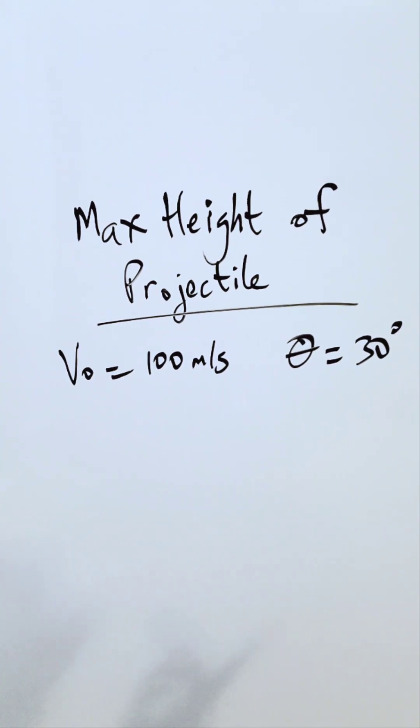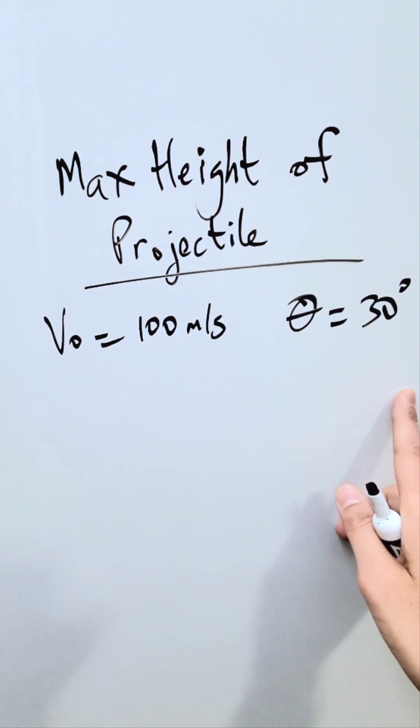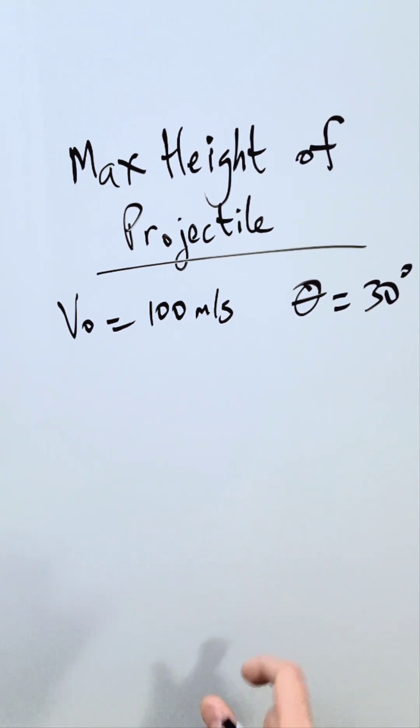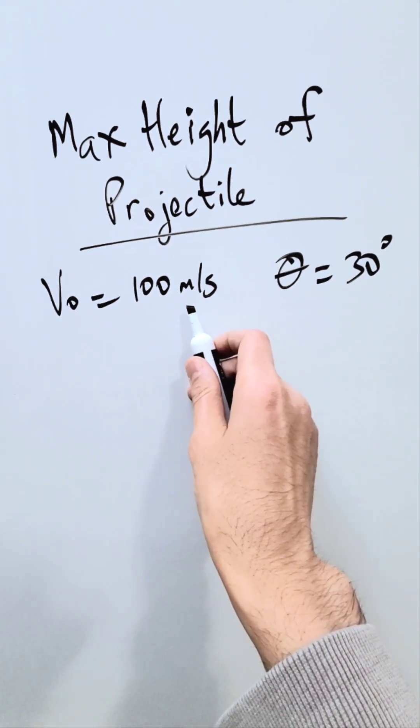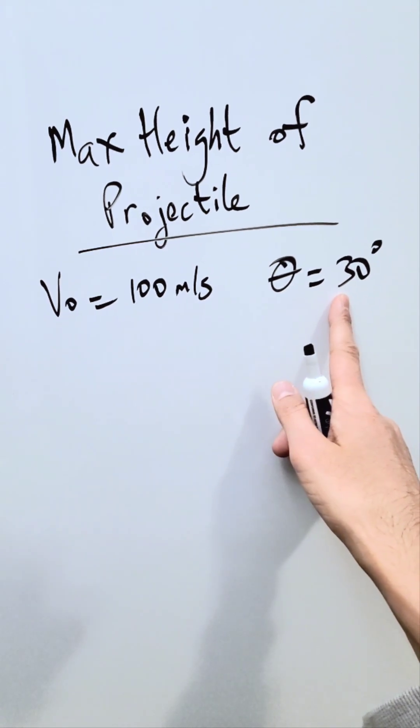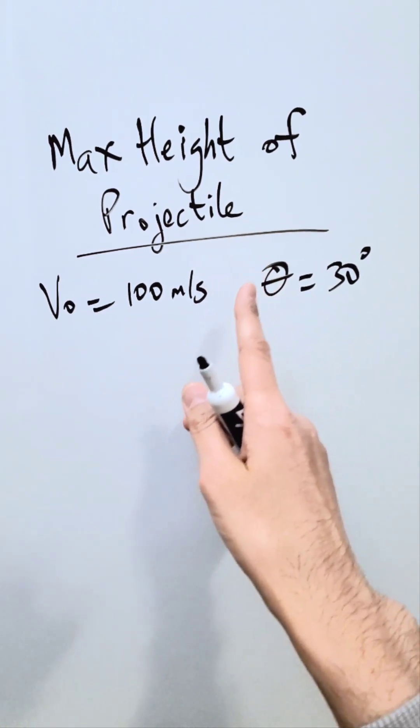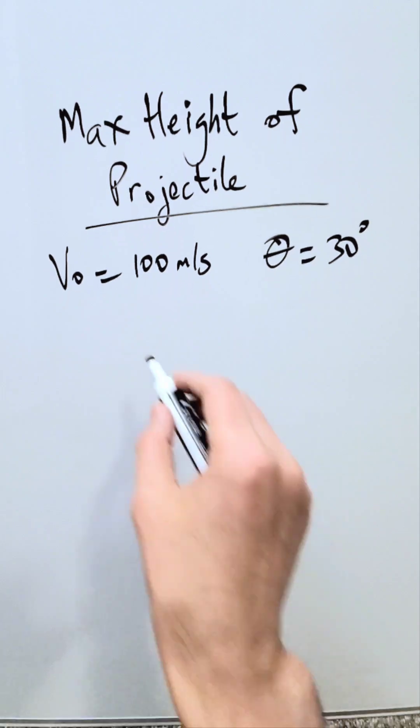Let's examine a projectile motion question. The trajectory of such a projectile is always an upside down parabola. You are looking here at an object which is shot with initial velocity of 100 meters per second at an angle 30 degrees with respect to the ground. What is the maximum height attained by this projectile?